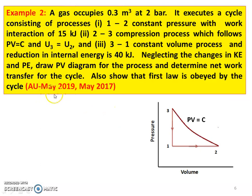The next example, from May 2019 and May 2017 question paper: a gas occupies 0.3 meter cube at 2 bar. It executes a cycle consisting of the following processes. Process 1 to 2: constant pressure with work interaction equal to 15 kilojoules. Process 2 to 3: compression following PV equal to constant, U3 equal to U2. Process 3 to 1: constant volume process and reduction in internal energy is 40 kilojoules. Neglecting change in kinetic and potential energy, draw the PV diagram and determine net work transfer for the cycle. Also show that first law is obeyed.